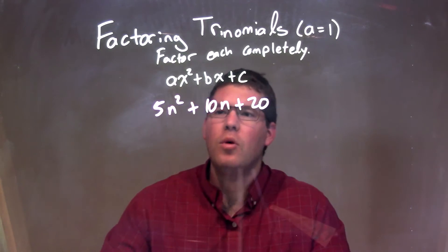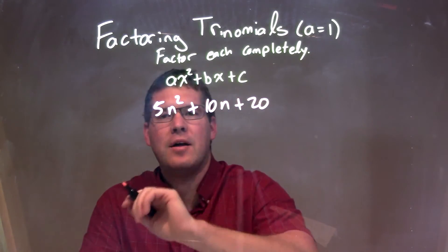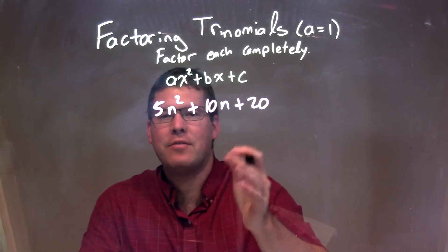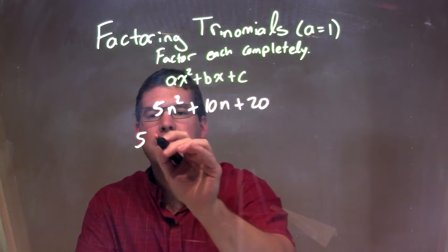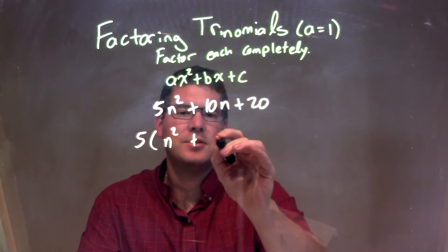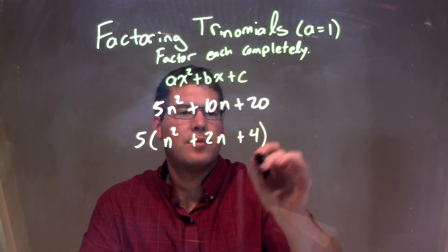Alright. Well, it's easier when our a value is 1, so I'm going to see if I can pull this 5 from all parts. Well, 10 and 20 both are divisible by 5. So I can pull a 5 here. Then I'm left with just n² there, plus 5 goes into 10 two times, so 2n right there, and 5 goes into 20 four times.